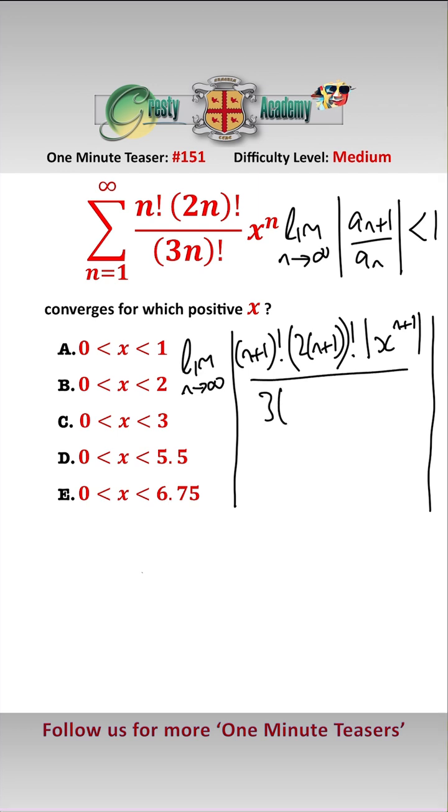That's the a n plus 1th term and the a nth term we know is n factorial 2n factorial mod x to the n over 3n factorial.